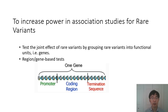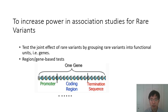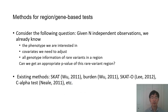In order to increase the power in association tests for rare variants, one natural idea is to test the joint effects by grouping rare variants into functional units, such as genes or other genomic regions. For example, in a given gene, we can group rare variants into promoter, coding regions, and termination sequence. We can also test all rare variants in this gene together.